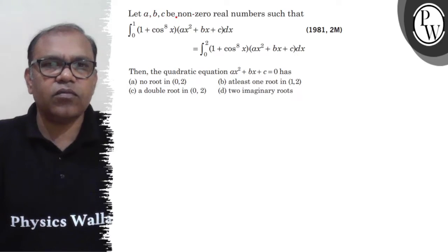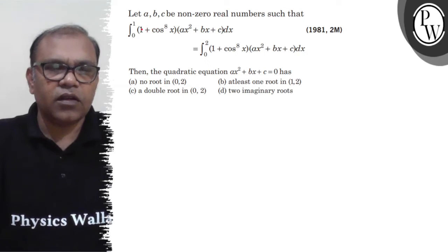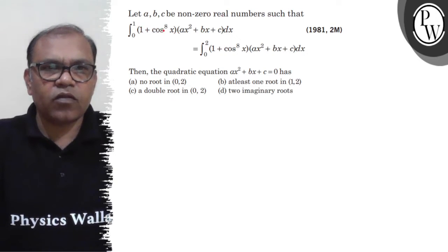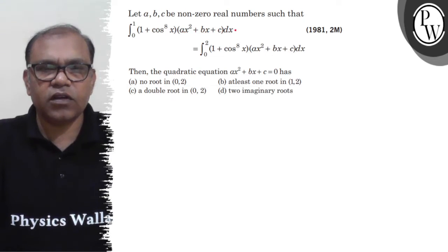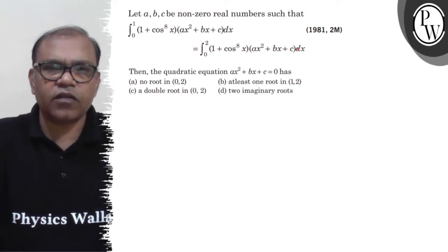let a, b, c be non-zero real numbers such that integration 0 to 1, (1 + cos⁸x)(ax² + bx + c)dx. This equals to integration 0 to 2, (1 + cos⁸x)(ax² + bx + c)dx.